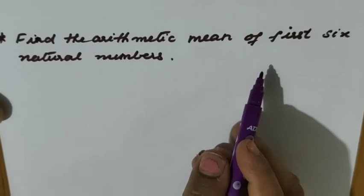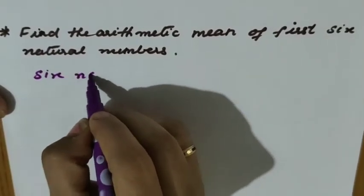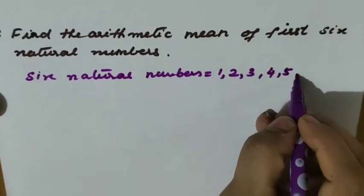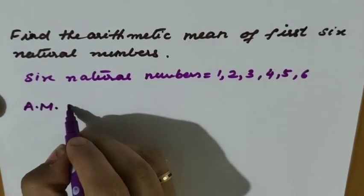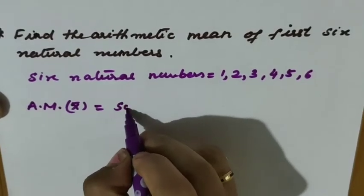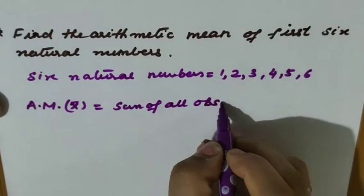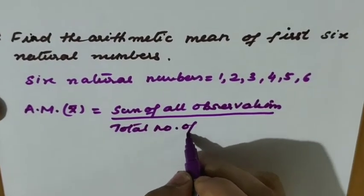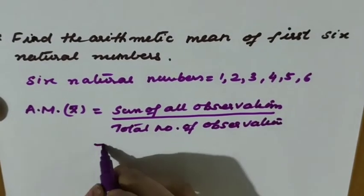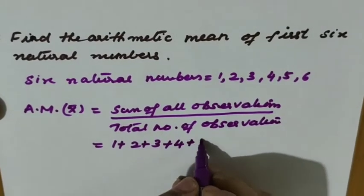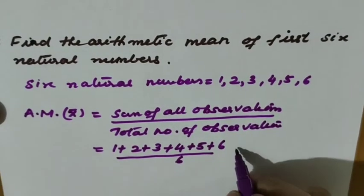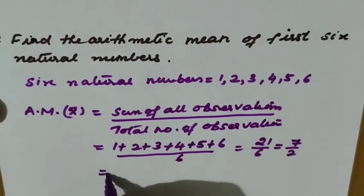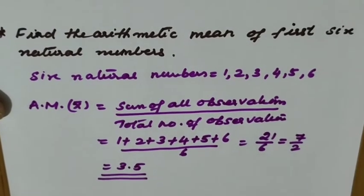Next: find the arithmetic mean of the first six natural numbers. The six natural numbers are x = 1, 2, 3, 4, 5, 6. Arithmetic mean x-bar equals the sum of all observations divided by the total number of observations: 1+2+3+4+5+6 divided by 6. The sum is 21, so 21 by 6 equals 3.5. That is the arithmetic mean of the first six natural numbers.